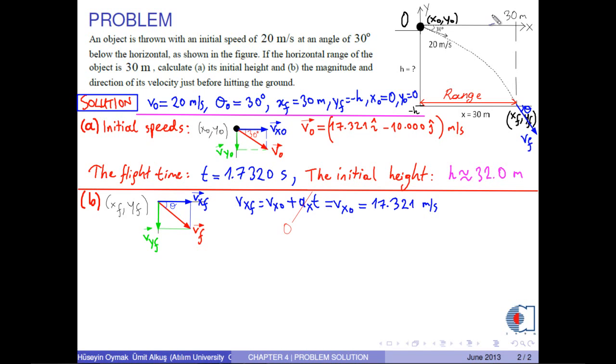Next, the y component of the final velocity is calculated by this formula. Here, ay is equal to minus g. Then, we have vy0 minus g times t. With the corresponding numerical figures, we obtain negative 26.974 meters per second.